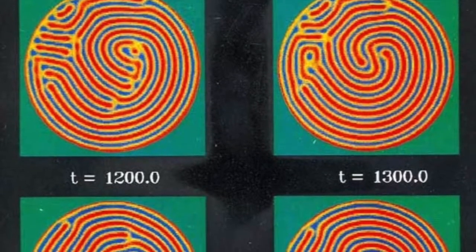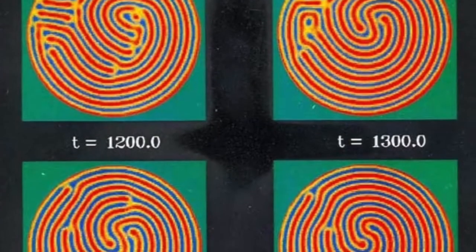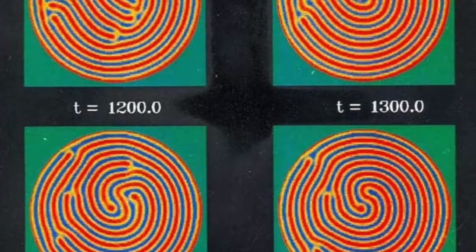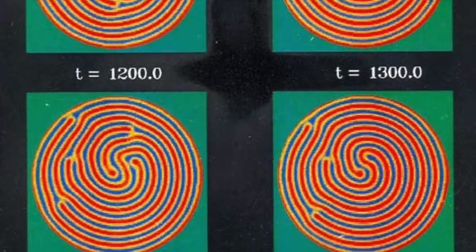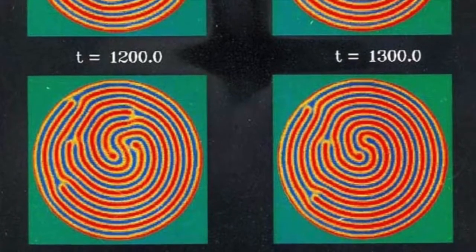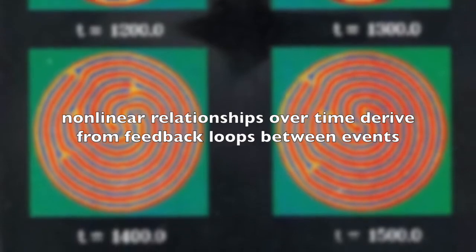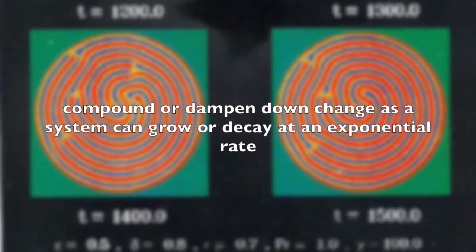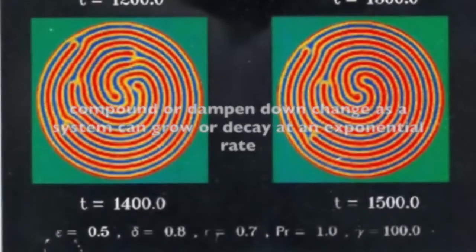These non-additive interactions are called synergies. Relations that add value to the combined organization beyond that of the individual parts are called positive synergies; those that subtract are called negative synergies. Likewise, nonlinear relationships over time derive from feedback loops between events which work to compound or dampen down change as a system can grow or decay at exponential rates.